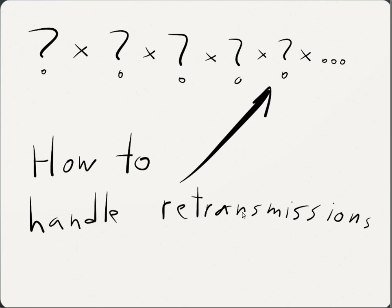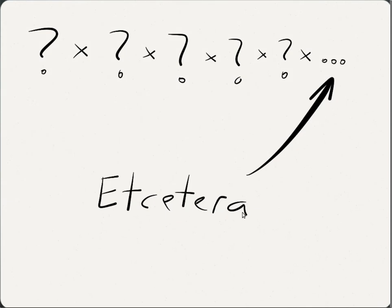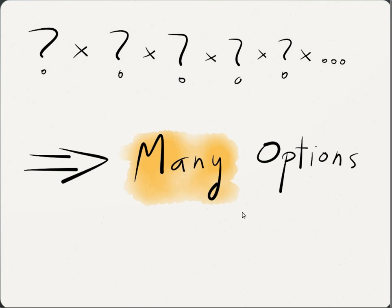How to handle retransmissions of messages affected by transient faults. And many other things. There are, therefore, many options for designing a star replication scheme for FTT-CAN. Which option to choose is not trivial. So what should we do?